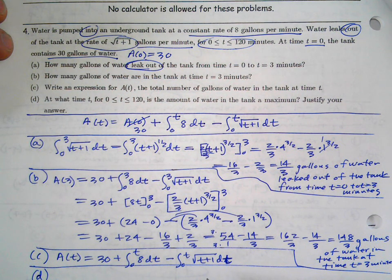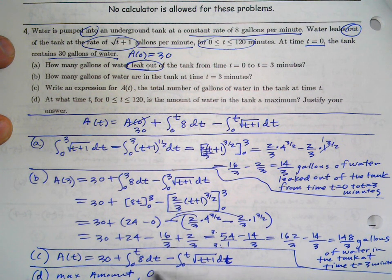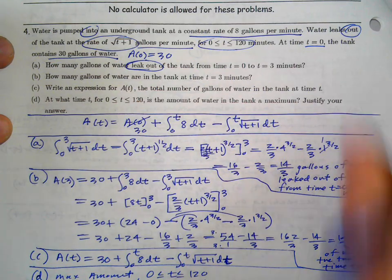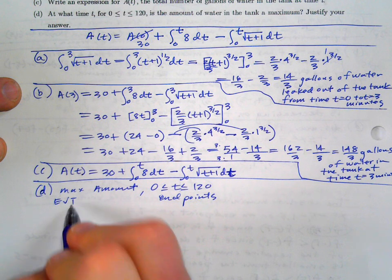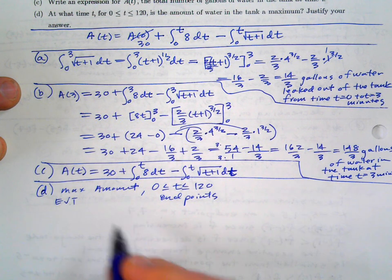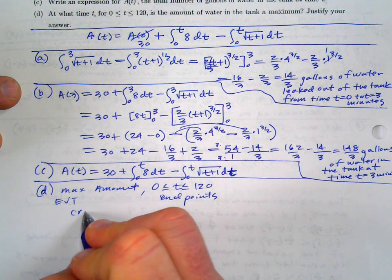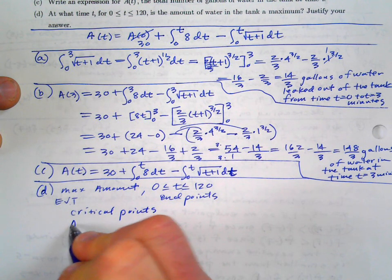Part d: at what time is the amount of water in the tank a maximum? We're looking for a max and we have endpoints, so we use the Extreme Value Theorem. I'll do some scratch work first, then write a nice thorough answer with justification. We need to find critical points — find A'(t), set it equal to zero or find where it's undefined.